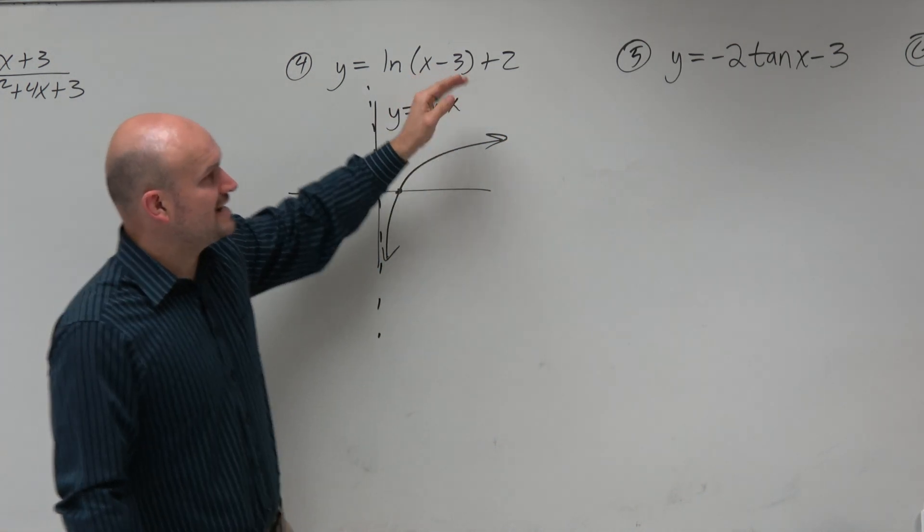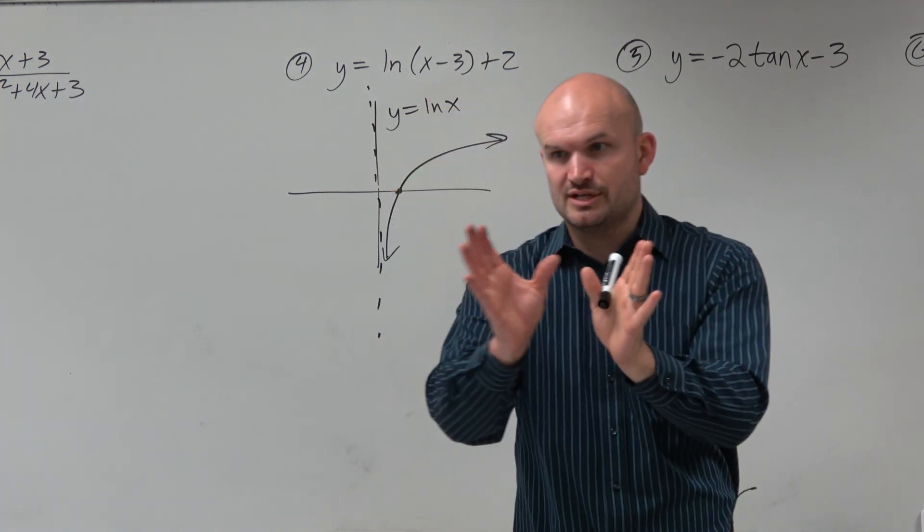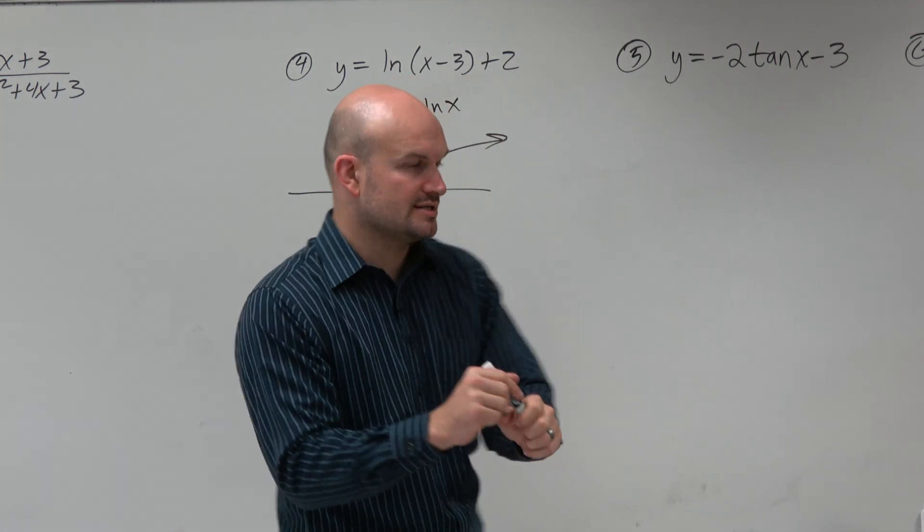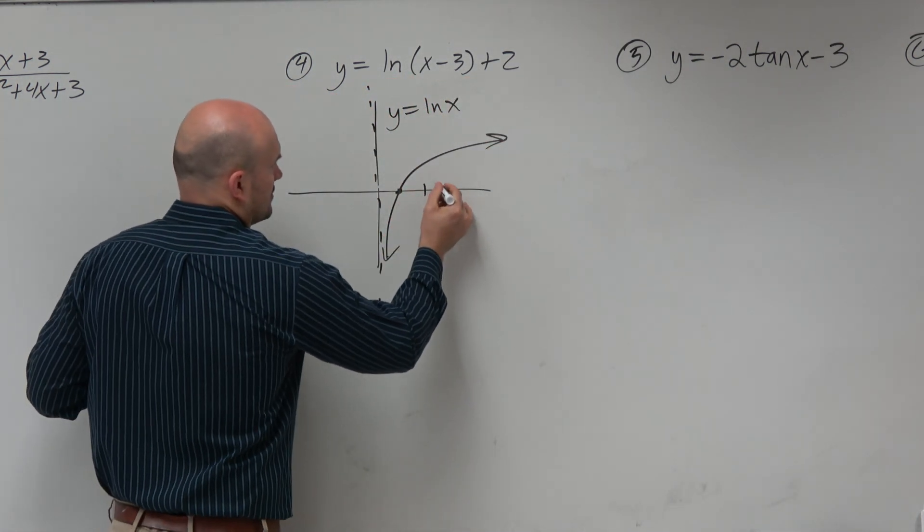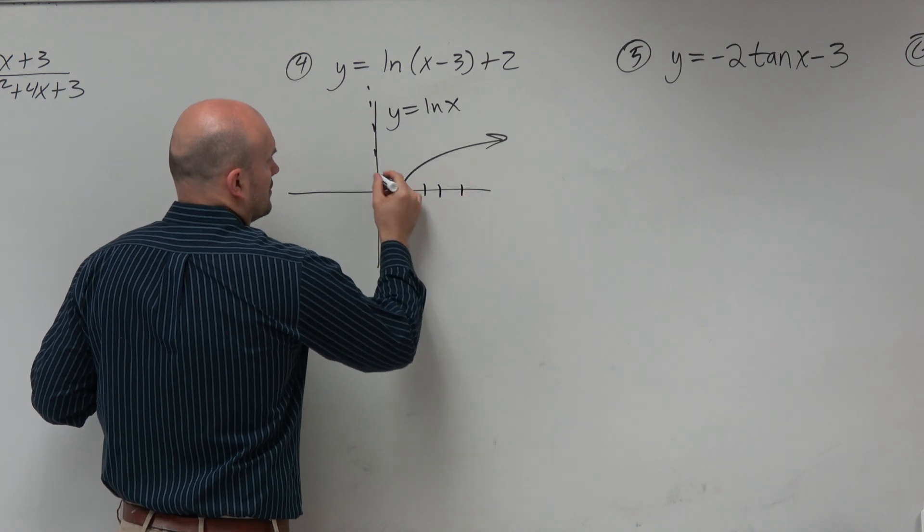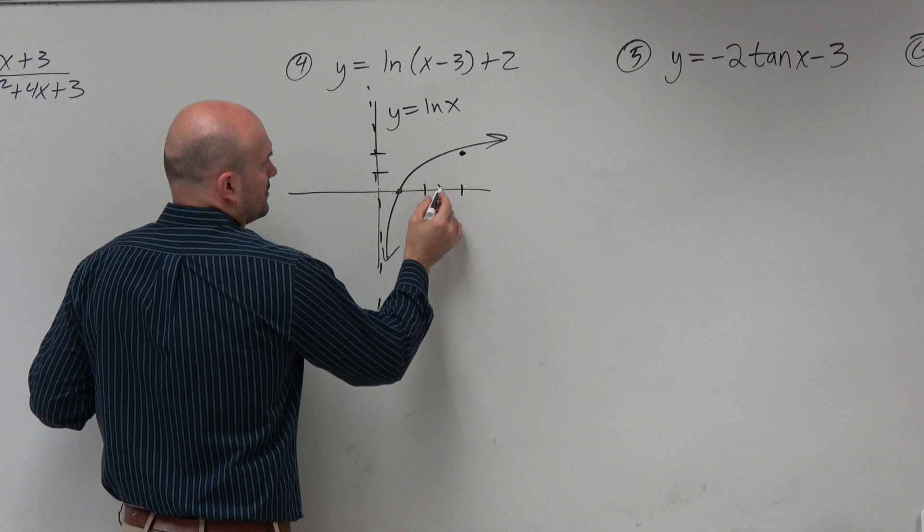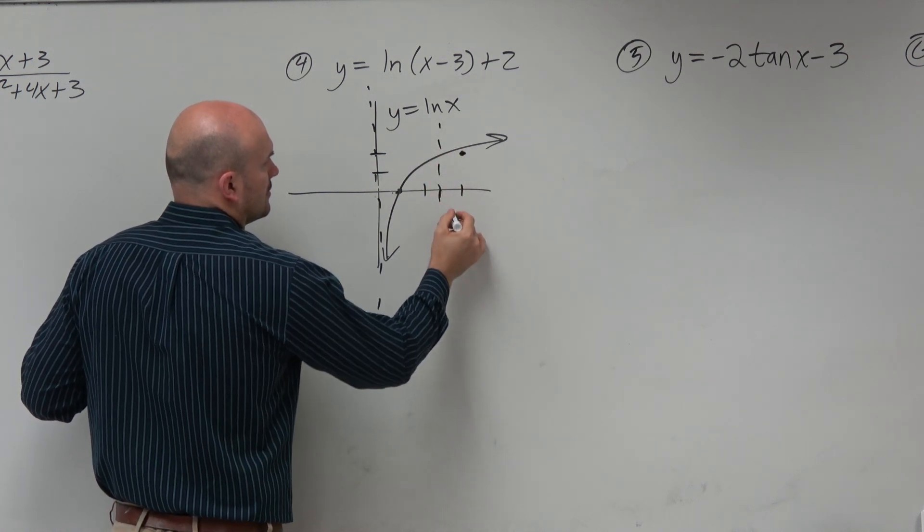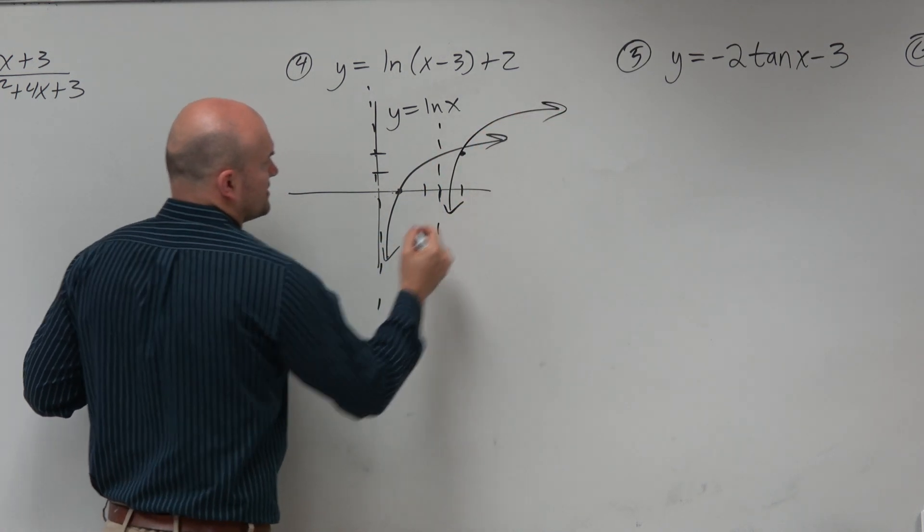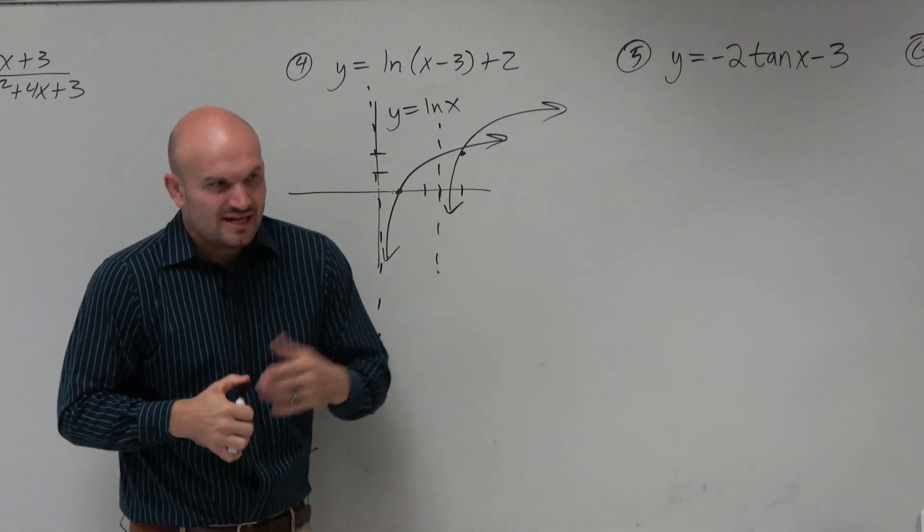So then we look at, well, what is this minus 3 plus 2 doing? Well, all that's doing is just shifting the graph three units to the right and then up two units. So now, when I redraw the graph, is the graph still continuous? Yeah, it just got shifted, right?